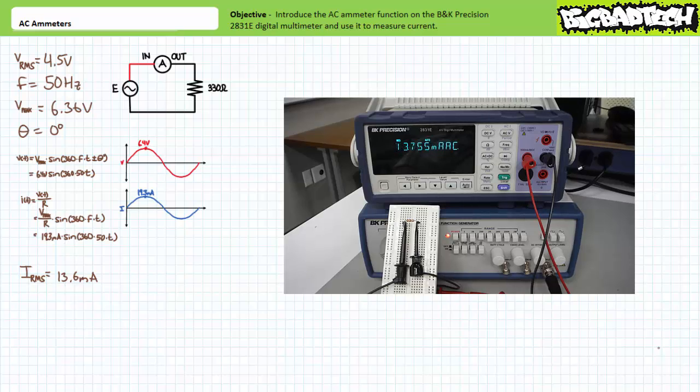Powering on the function generator we observe a current draw close to our anticipated effective value of 13.6 milliamperes. Note by taking our time and thinking about our every action we never ran the risk of hurting ourselves or damaging equipment.